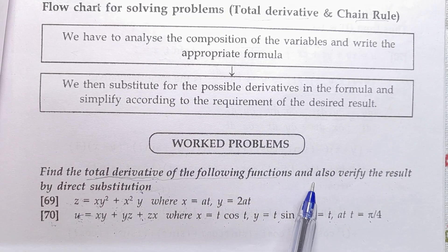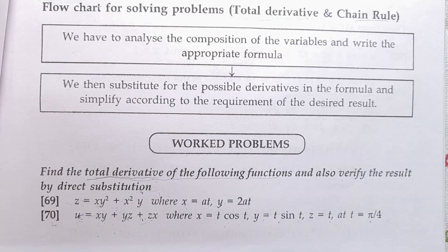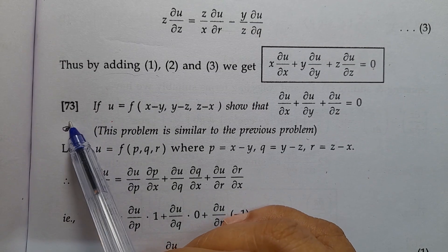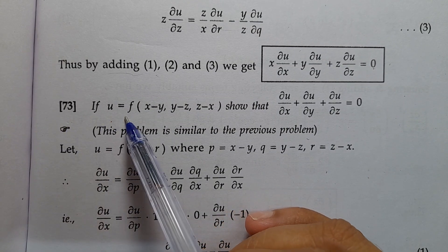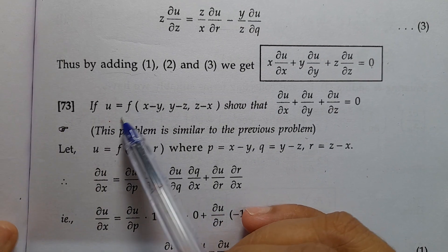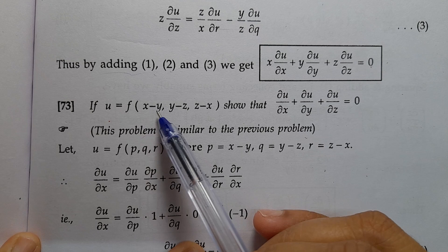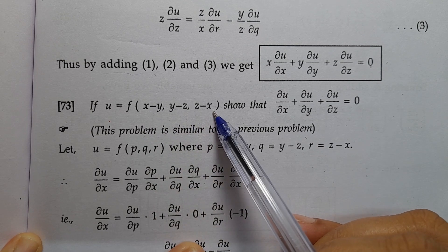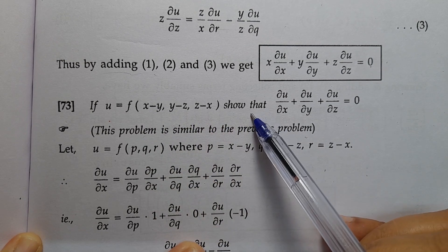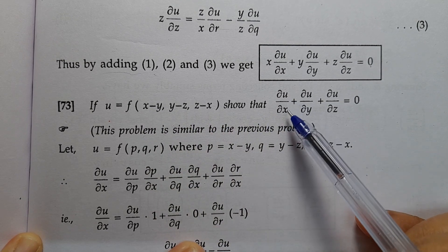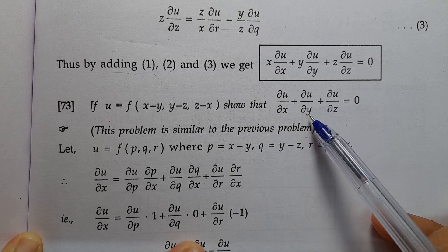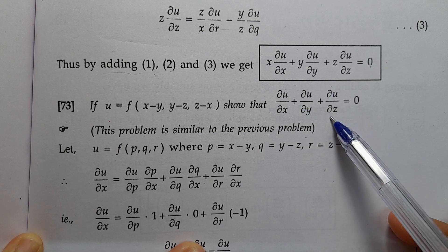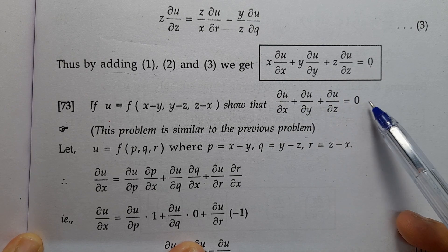Worked Problems. Problem No. 73: If u equals f of (x minus y, y minus z, z minus x), show that ∂u/∂x plus ∂u/∂y plus ∂u/∂z equals 0.